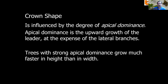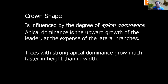Crown shape is influenced by the degree of apical dominance — the upward growth of the leader at the expense of the lateral branches. Trees with strong apical dominance grow much faster in height than they do in width, so the lateral branches fall in line beneath the dominant leader.